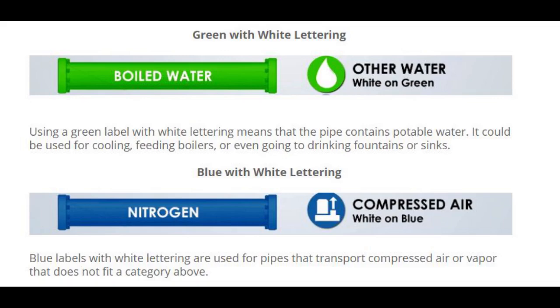Blue with white lettering: Blue labels with white lettering are used for pipes that transport compressed air or vapor that does not fit a category above.